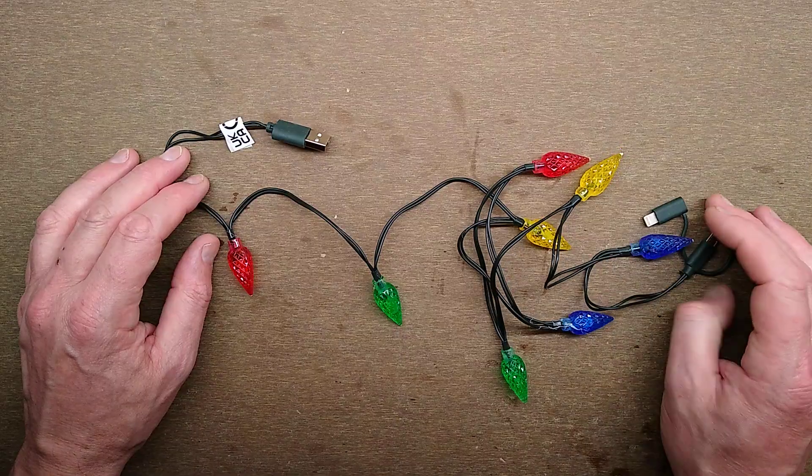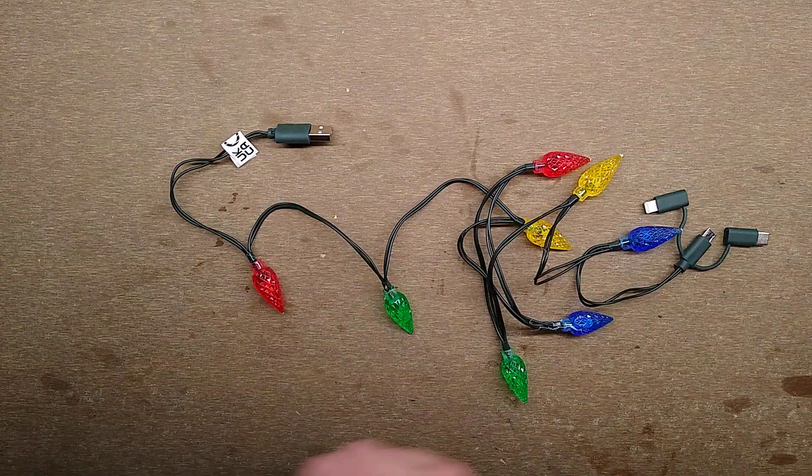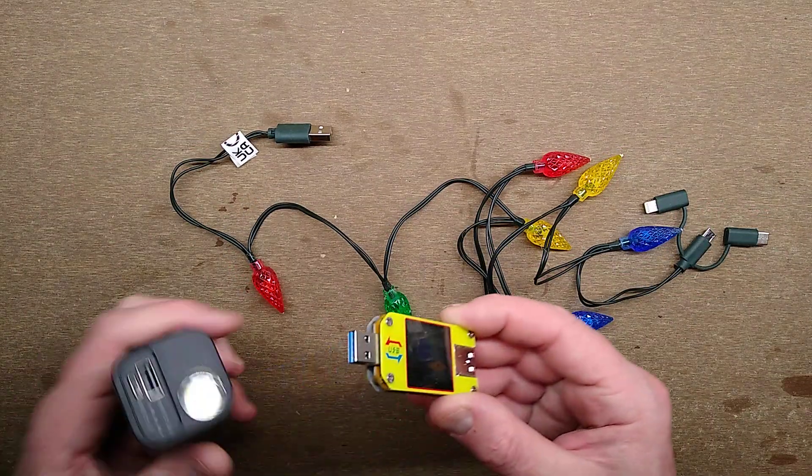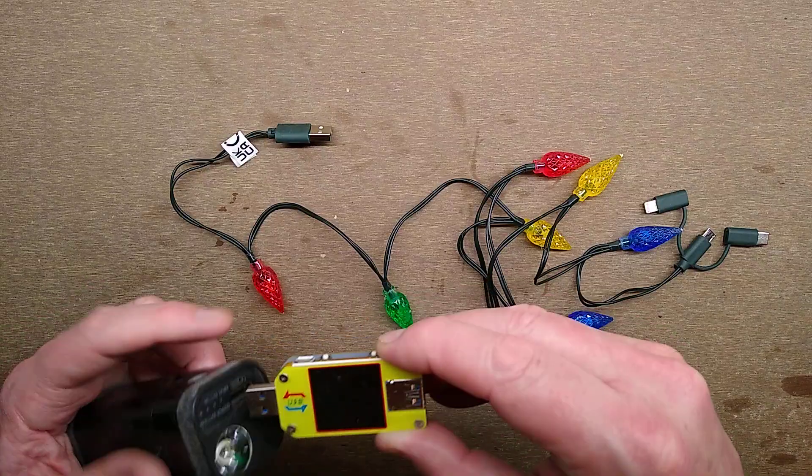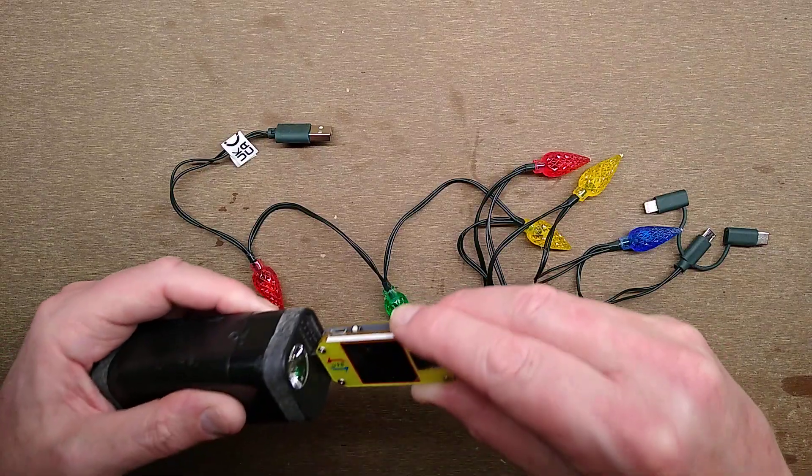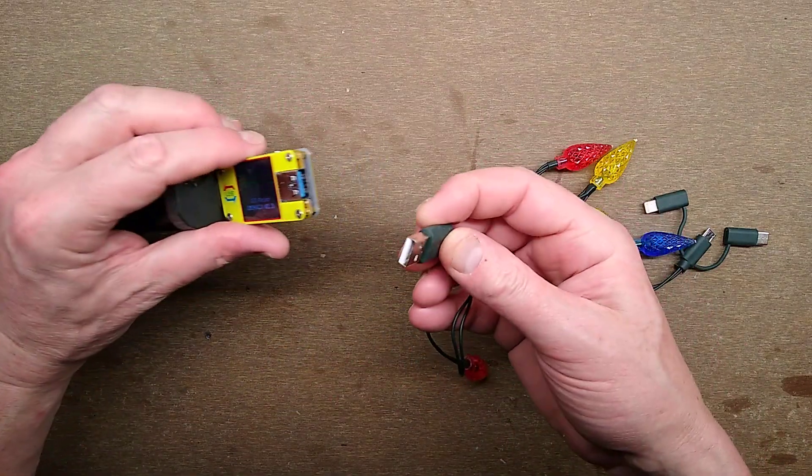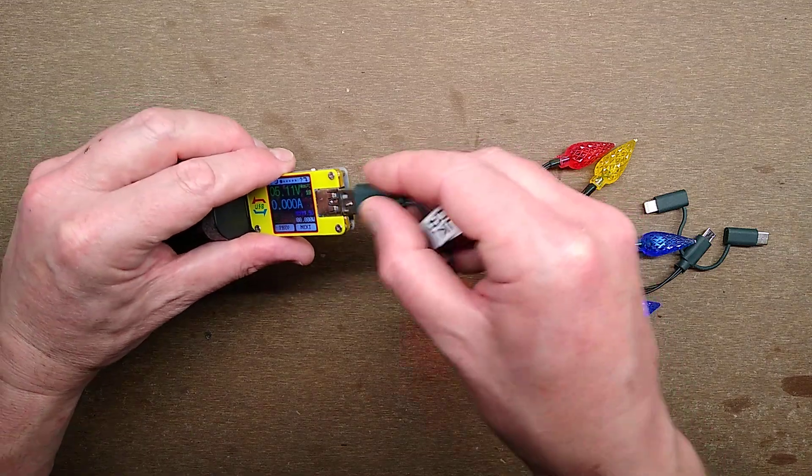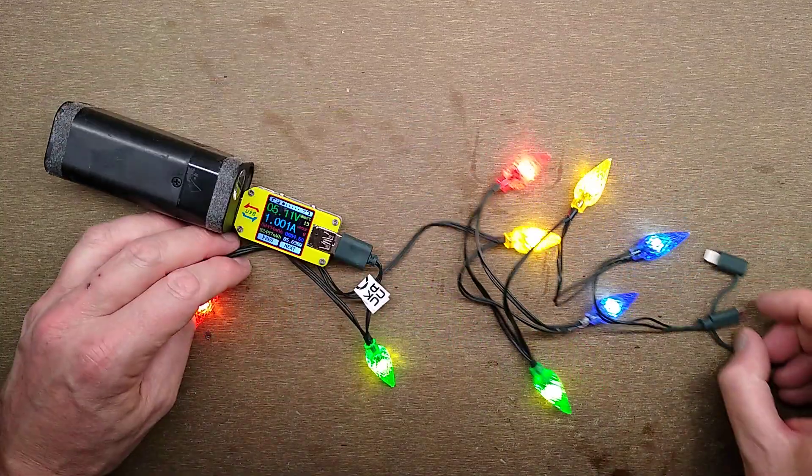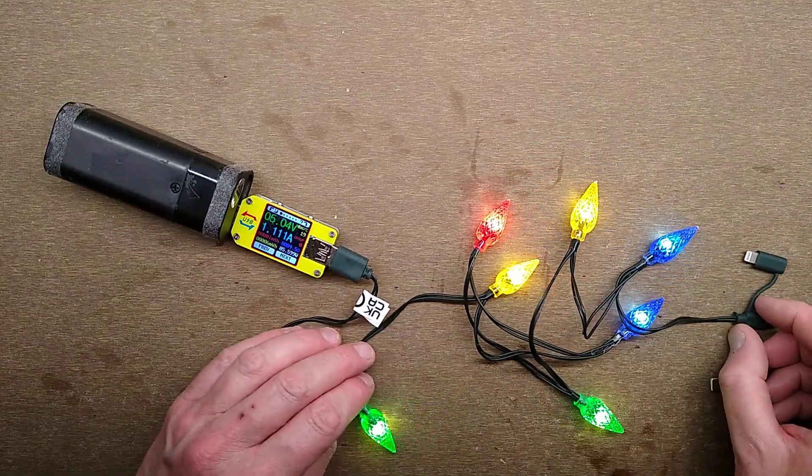This has a resistor per LED because it has... let's test that. Let's use the little USB tester and we'll see what current it draws. It should be in the region of, how many LEDs are there? 1, 2, 3, 4, 5, 6, 7, 8 LEDs.